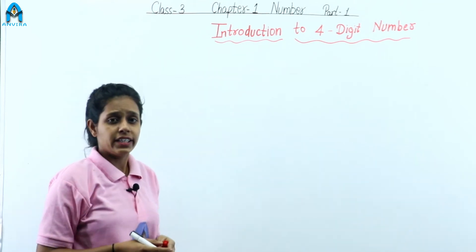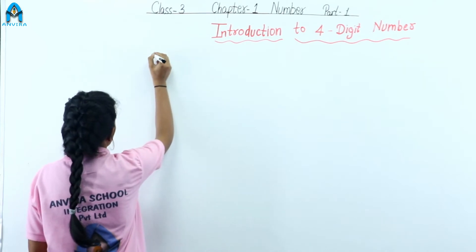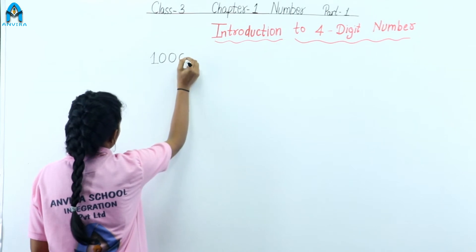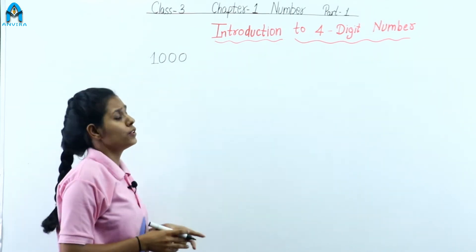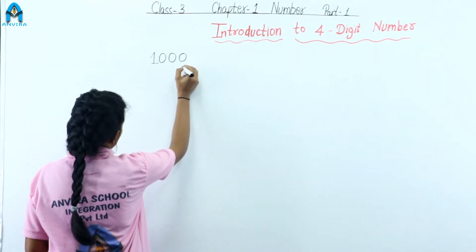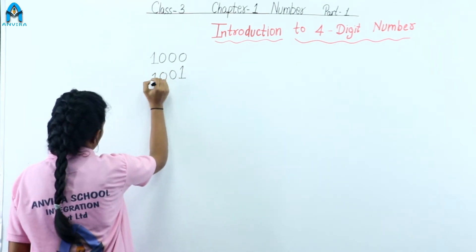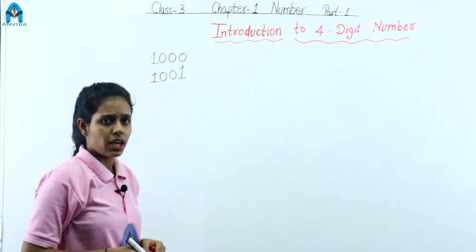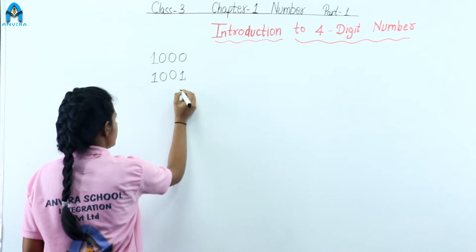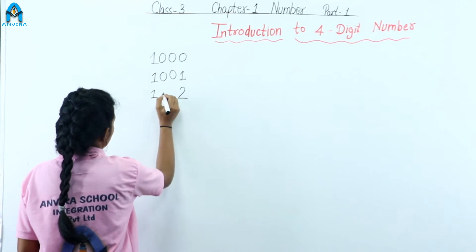The smallest 4-digit number is 1000. What comes after 1000? The ones digit increases by 1 to make 1001, and the rest remain the same. Just like this, next the ones digit increases again — so we continue counting upward.